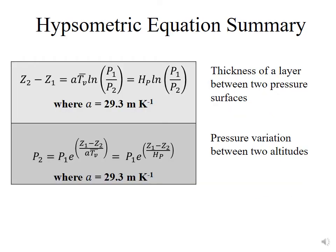We have two versions of the Hypsymmetric Equation. The first one is defined as the thickness of a layer between two pressure surfaces. Z2 minus Z1 would be your thickness, equal to a constant times the average virtual temperature of that layer times the natural logarithm of the ratio of P1 over P2.